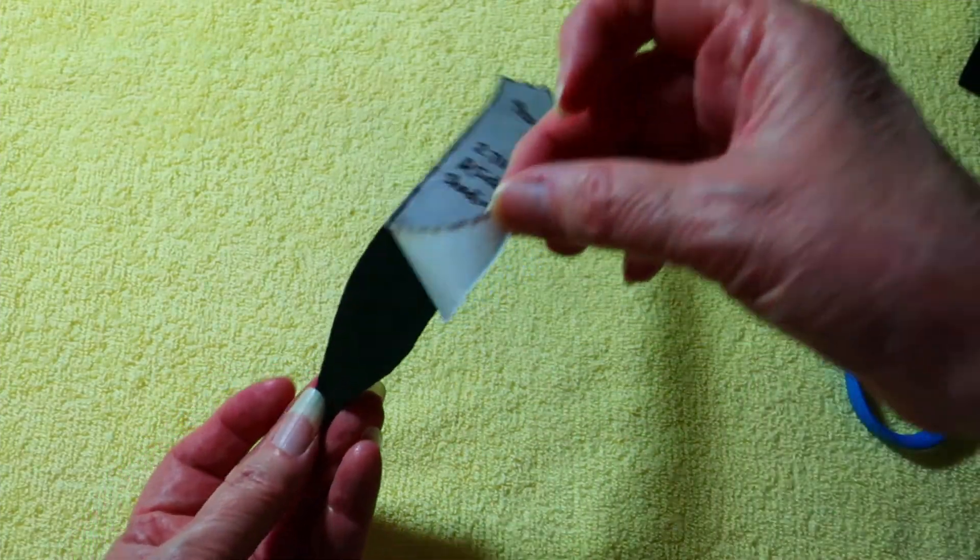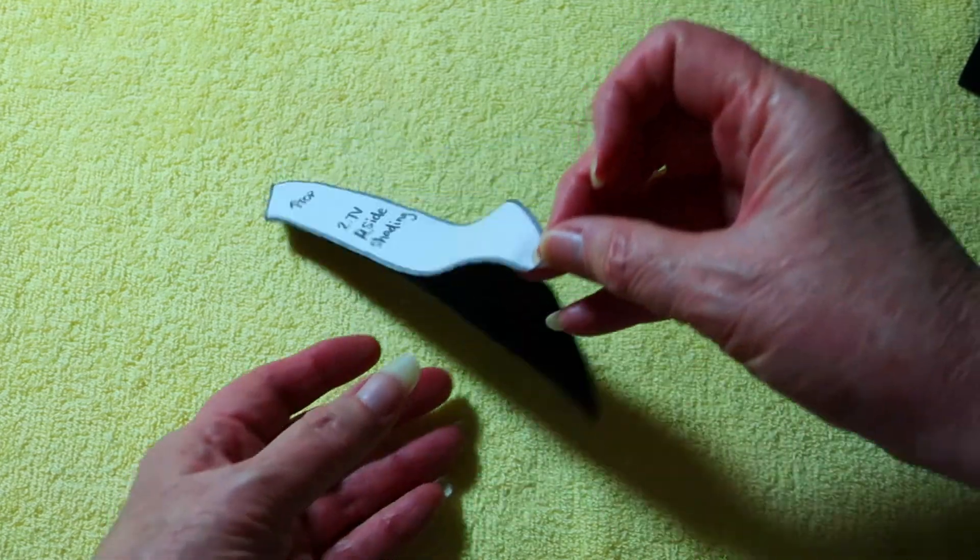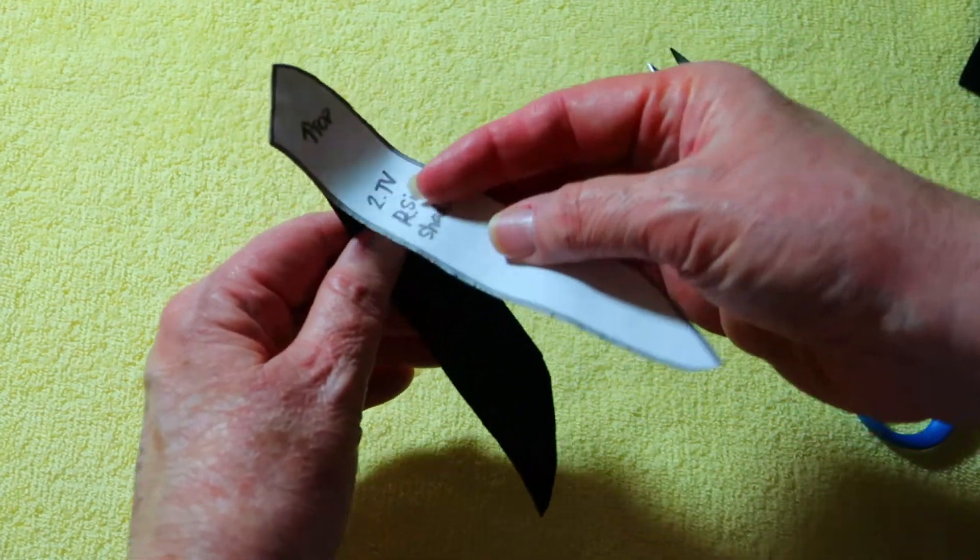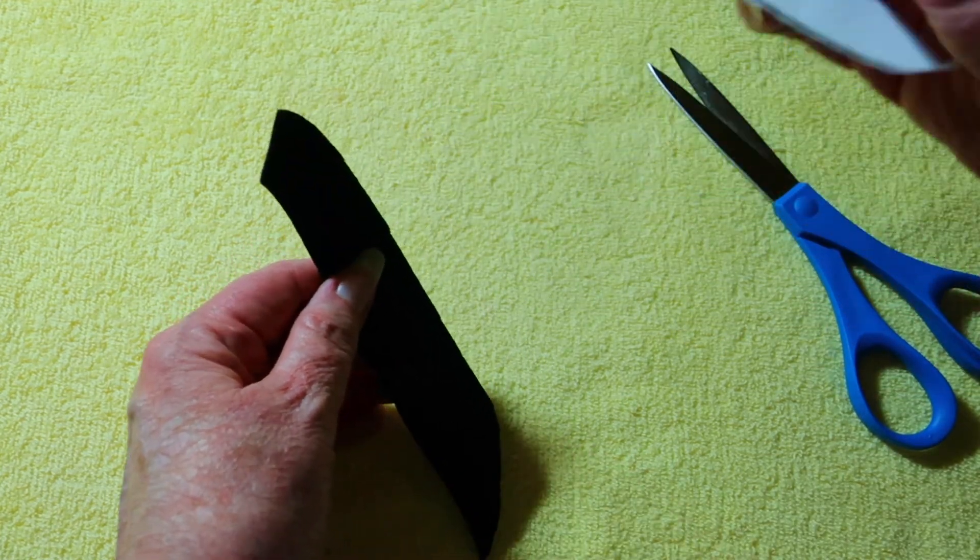Once it is completely cut out, pull the freezer paper off the felt. If you need to do any trimming, it is a bit easier to do while the freezer paper is still adhered.